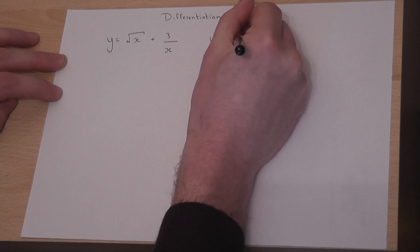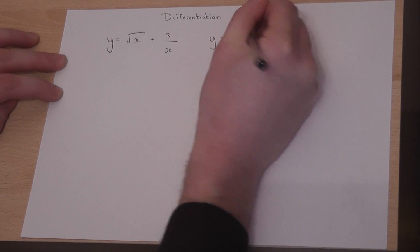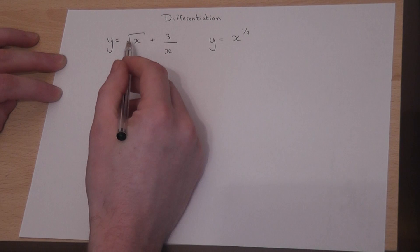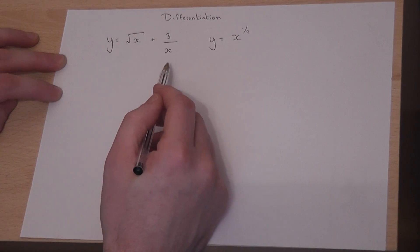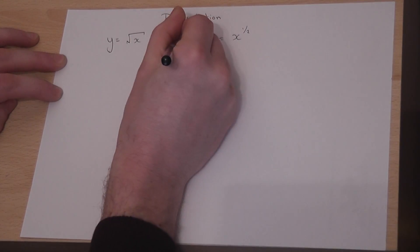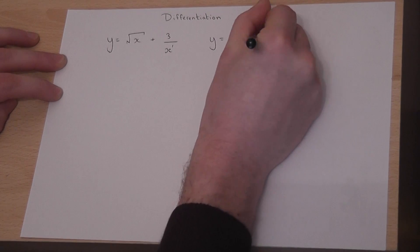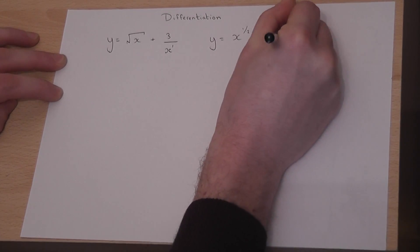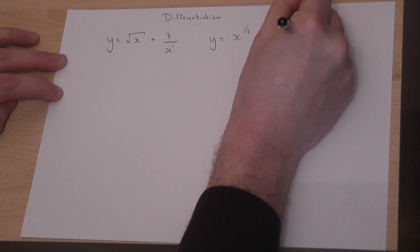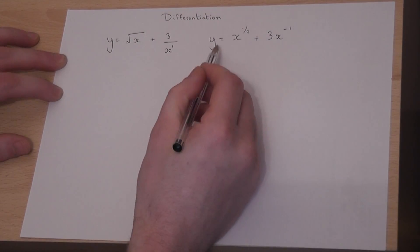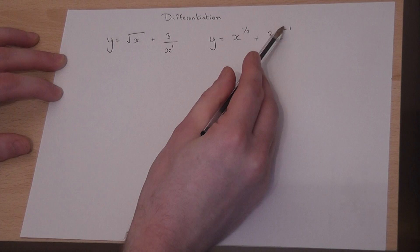So we know that the square root is x to the power of a half. The power of a half means square root. When we have 3 over x, or over x to the power of 1, we can write this as 3 lots of x to the power of minus 1. So we now have the expression written as numerical powers.